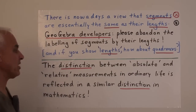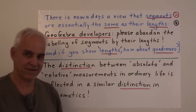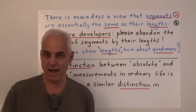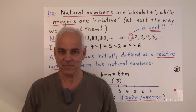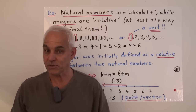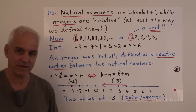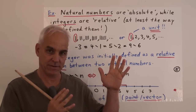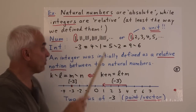This distinction between absolute and relative measurements that we have in ordinary life is reflected in a similar distinction in mathematics — it turns out to be very important in a number of different ways. Our first example goes back to the beginnings of this series, where we introduced natural numbers and arithmetic with them, and then integers. Natural numbers are very good examples of absolute measurement. When we're counting the number of objects — one, two, three, four, five — we're making an absolute measurement.